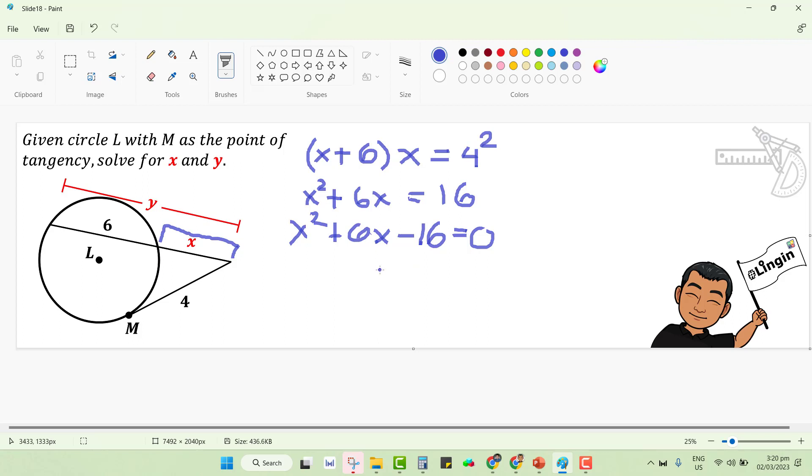We are going to factor this in such a way that we could get the values for x. If I'm correct, the factors for this by AC method: you have your x and you have your x. Negative 16 factors of it that could be added to get 6 is positive 8 and negative 2.